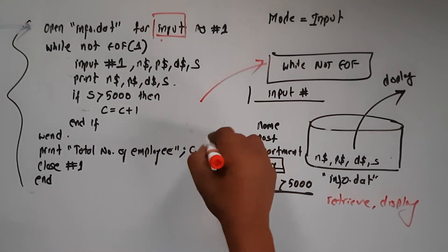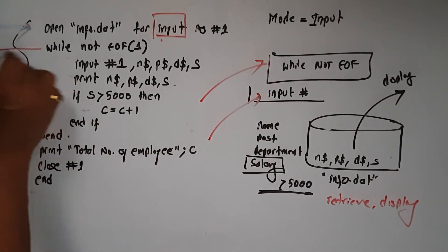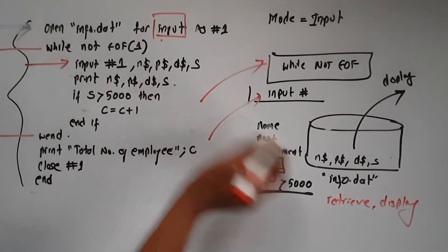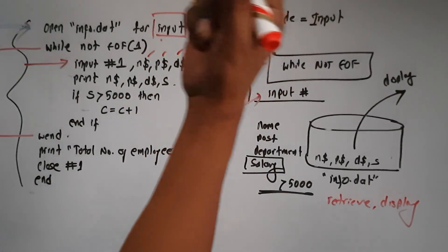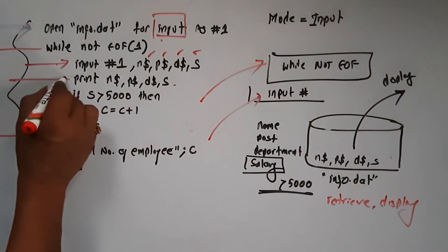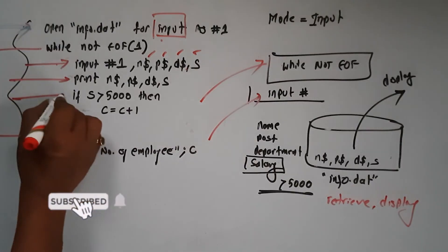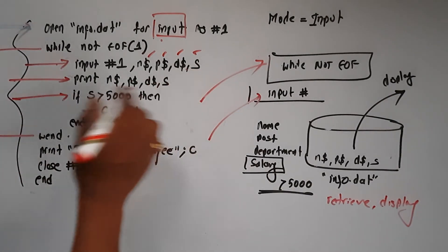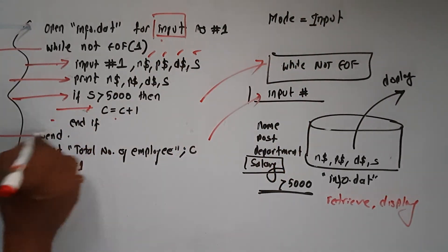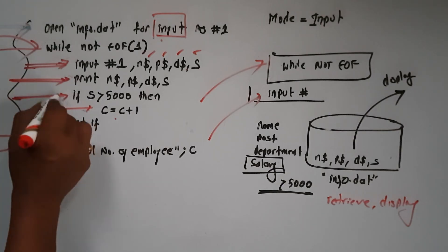While Not EOF and INPUT# — we can understand the loop. I am very happy with the introduction video. We can see the end-of-file check. File number 1 is info.dat. This variable will be kept in the record — one set of record at a time. Then we check: if salary is greater than 5,000, C is incremented.